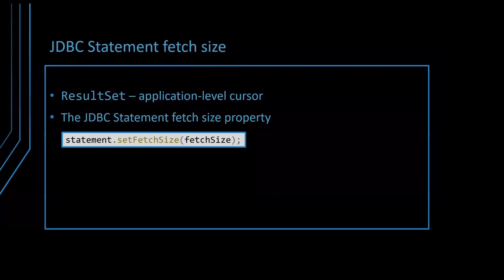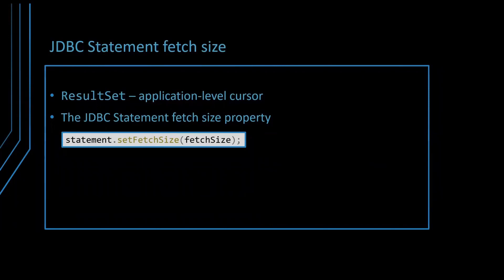This is a lesser-known thing. Most of the time when we're using JPA, Hibernate, and nowadays Spring Data JPA, we kind of forget that underneath everything flows through JDBC. And there are some things which are fundamental, but if we don't know about them, we're going to lose some opportunities to optimize the code, or we're going to misuse some features like, for instance, streaming. And one of these is that the JDBC statement has this fetch size property.